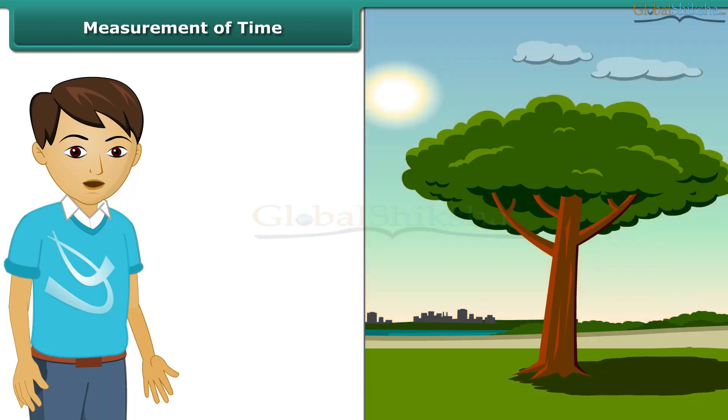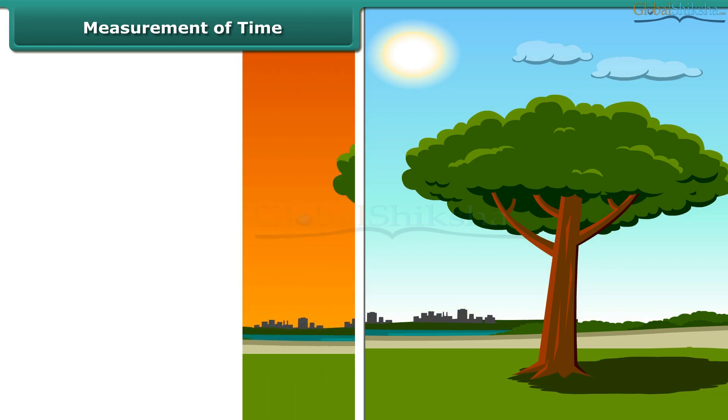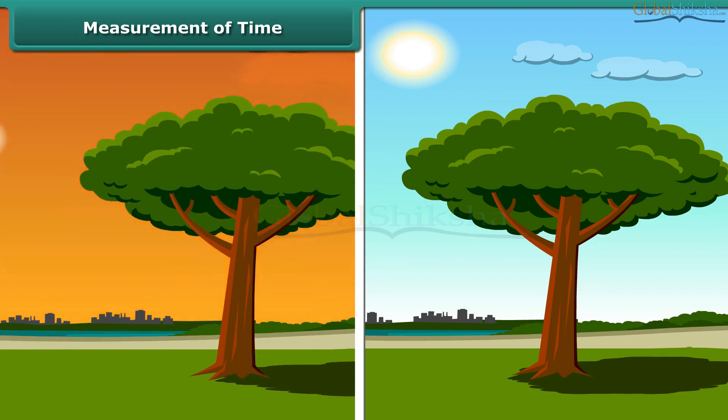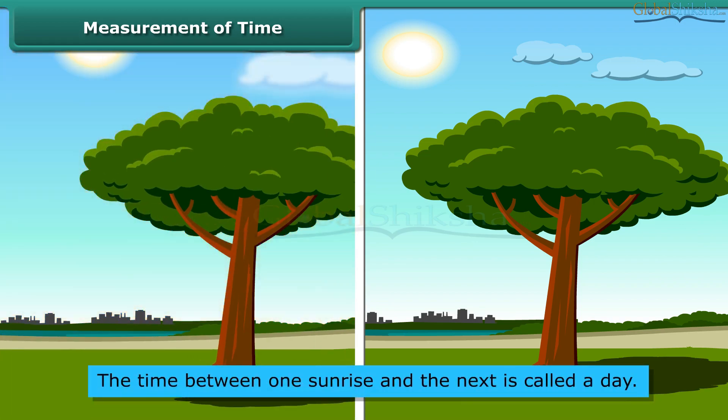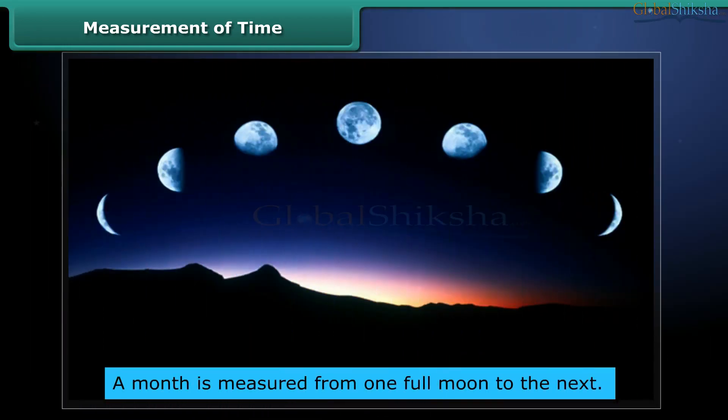Have you ever wondered how our elders could tell the approximate time of the day by just looking at the shadows? Many events in nature repeat themselves after definite intervals of time. For example, sun rises every day in the morning. The time between one sunrise and the next is called a day. Similarly, a month is measured from one full moon to the next.